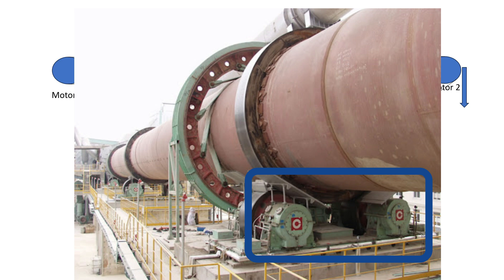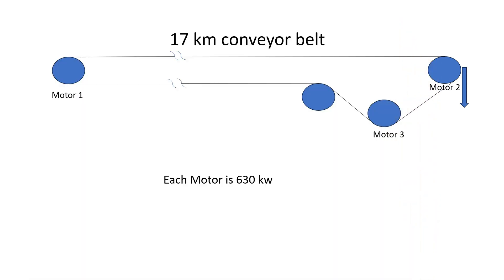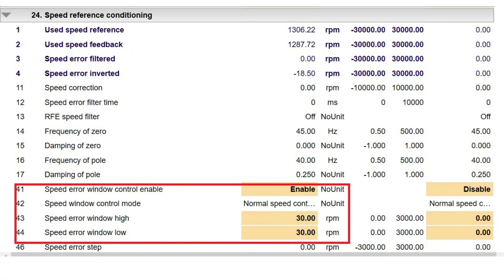If you have equipment coupled flexibly, like this conveyor belt, then you can use speed control mode. Because there is a provision that allows some speed difference, like 10 RPM — since this is a flexible coupling, some tension variation can be allowed.